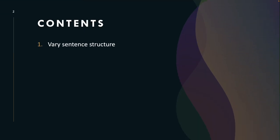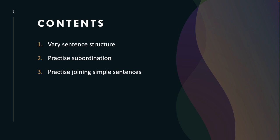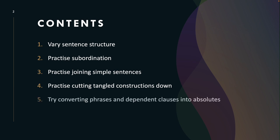First, let's take a look at the contents. Suggestion number one: vary sentence structure. Suggestion number two: practice subordination. Suggestion number three: practice joining simple sentences. Number four: practice cutting tangled constructions down. Number five: try converting phrases and dependent clauses into absolutes. And number six: vary your sentences.